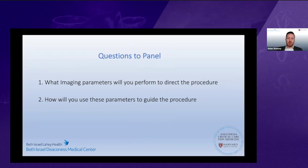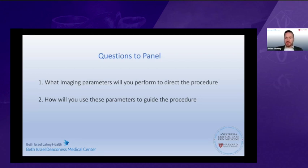Having spent time working at Toronto General where a lot of these procedures are done, I'm going to ask the panel — when you come across a patient like this, what are some of the imaging parameters you perform to direct the procedure? And maybe get the surgical perspective as to how the surgeons interpret these parameters to guide the procedure. Dr. Vegas, what protocol do you use when imaging a patient like this?